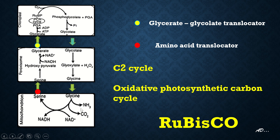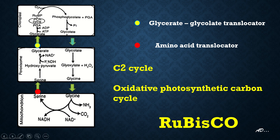This is where the plant loses carbon in the form of carbon dioxide. The serine formed in this reaction will go to the peroxisome via an amino acid translocator, where it will be converted to hydroxypyruvate by the enzyme serine glycolate aminotransferase.